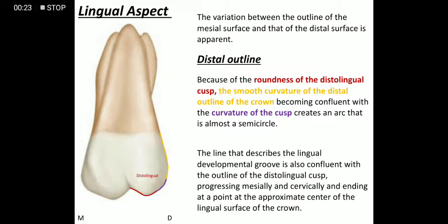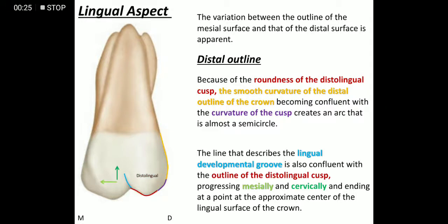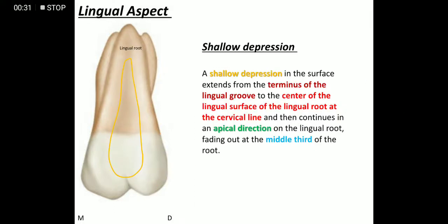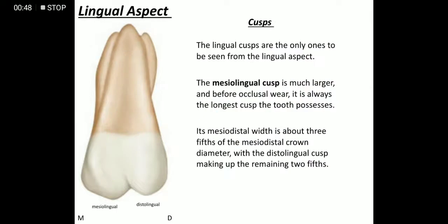On the distal outline you will find a smooth curvature which merges with the roundness of the distolingual cusp. This is then continued with the lingual developmental groove in the mesial and cervical direction. You can also appreciate a shallow depression on the lingual aspect, which starts from the endpoint of the lingual groove and continues to the center of the lingual surface at the cervical line, continuing in the apical direction.